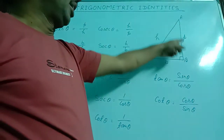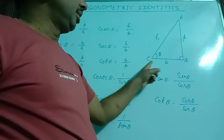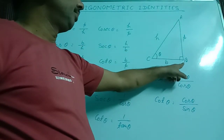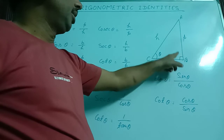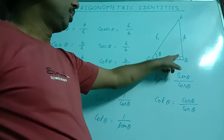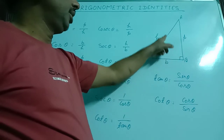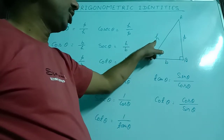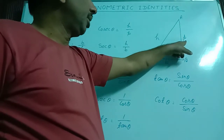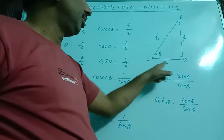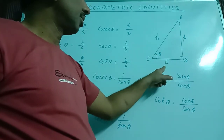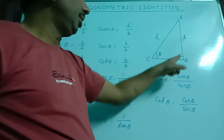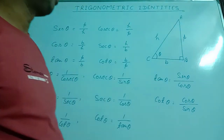A, B, C is any right angle triangle in which angle B is 90 degrees. The side opposite to 90 degrees is the hypotenuse, denoted by H. AB is perpendicular and BC is base. Perpendicular is denoted by P and base is denoted by B.